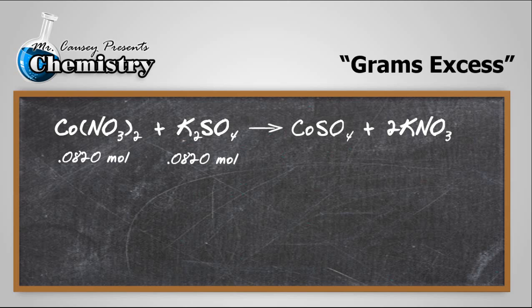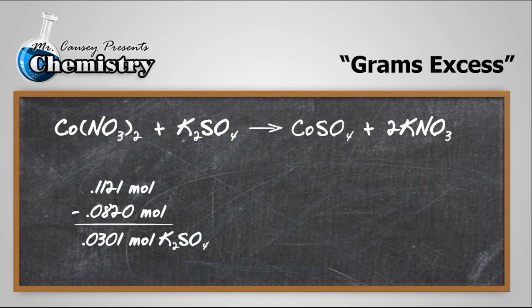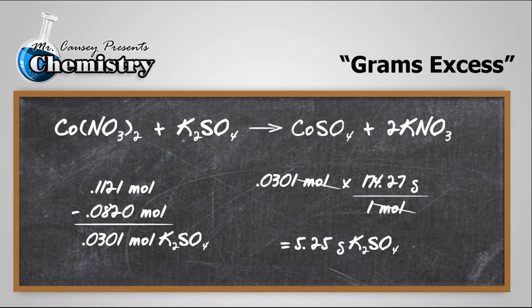Now, if we subtract the amount that we used from the amount we had present, we'll get 0.0301 moles of potassium sulfate. And now we can take that mole, multiply it to the molar mass, and we will have our amount of excess. And there are 5.25 grams of potassium sulfate left over. So we found the grams of excess.